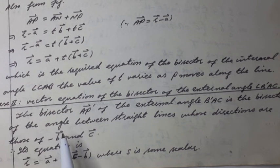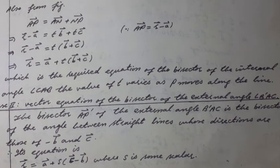If in this case the point of intersection A also passes through the origin, then A vector equals 0, and the corresponding equation is R vector equals S times (C-hat vector minus B-hat vector), where S is some scalar.